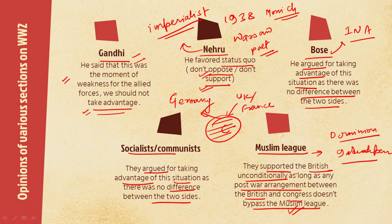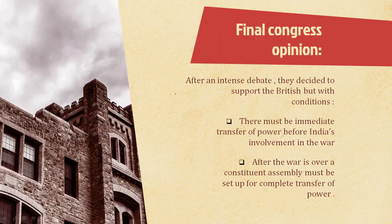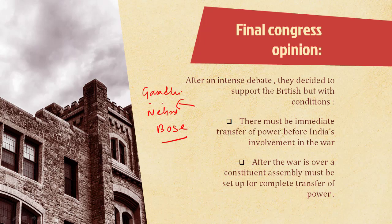To revise: Gandhi said we will support the British because it is the moment of their weakness and we will not take advantage. Nehru said we will neither support nor oppose. Bose was of the opinion that we should take advantage of the situation as there was no difference between the two sides. The Socialists had the same opinion. The Muslim League said we will support provided that after the war, if you are offering Dominion status or independence, our point of view should also be conceded.